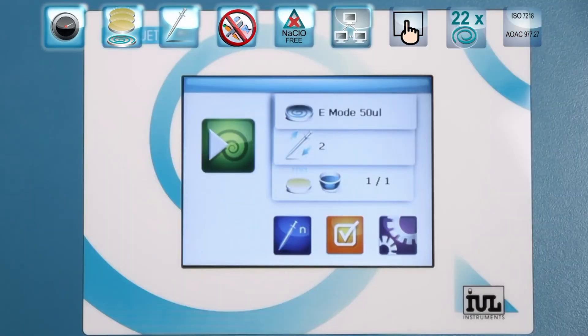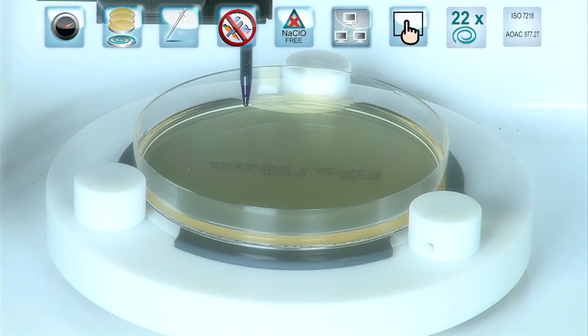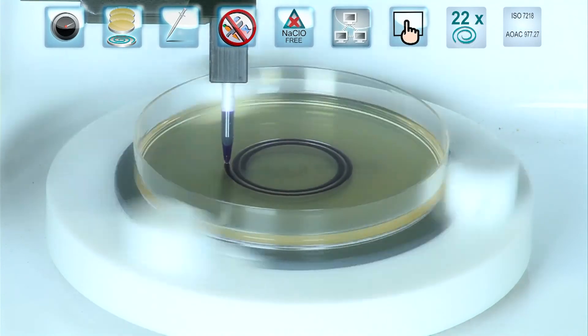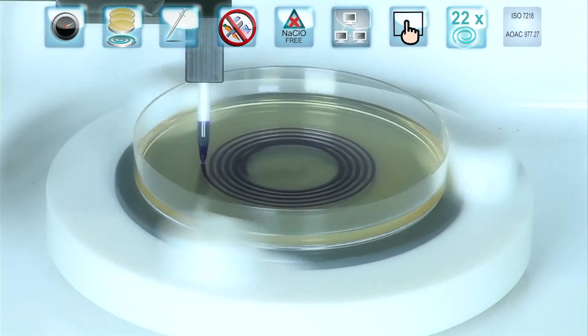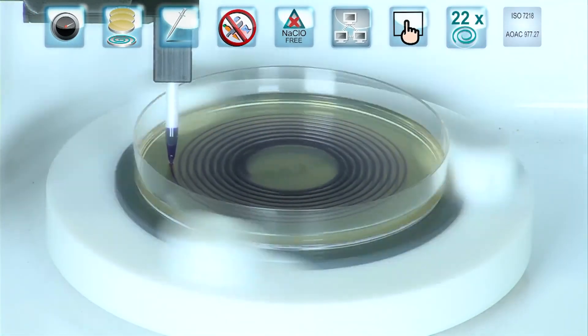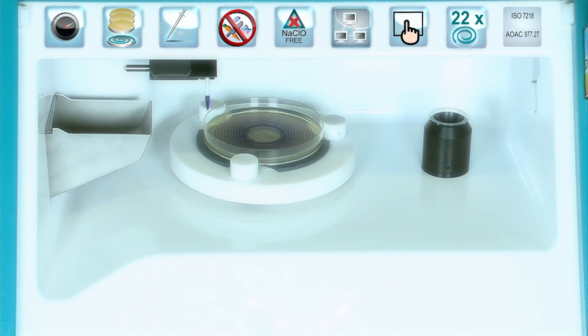EDIJED2's streamlined intuitive software is commanded from a color touchscreen panel. IUL also improved spread times in this device. EDIJED2 stands out as the spiral plater with the widest range of spiral distributions, making up to 22 of the most used distributions.